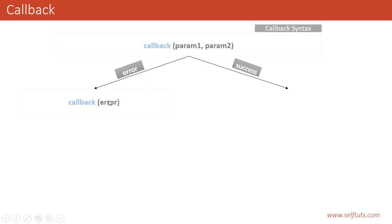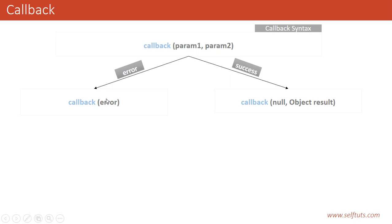In the success scenario, we need to provide both the first and the second parameter, but the first parameter should be null and the second parameter can be any JavaScript object or string. It can also be an error object or some string which we need to return.